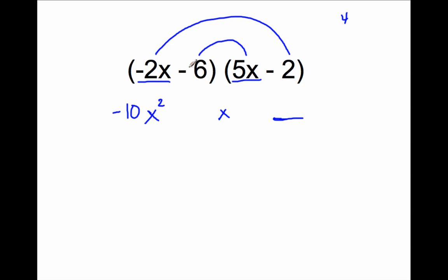Let's put that there. And then I'm going to add that to negative 6 times 5. 6 times 5 is 30, and the opposite of that is negative 30. So negative 30 plus 4. What does that mean?